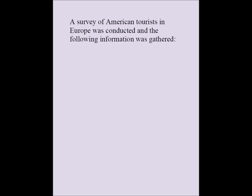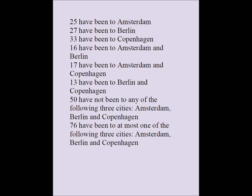A survey of American tourists in Europe was conducted and the following information was gathered: 25 have been to Amsterdam, 27 have been to Berlin, 33 have been to Copenhagen, 16 have been to Amsterdam and Berlin, 17 have been to Amsterdam and Copenhagen, 13 have been to Berlin and Copenhagen, and 50 have not been to any of the three cities.